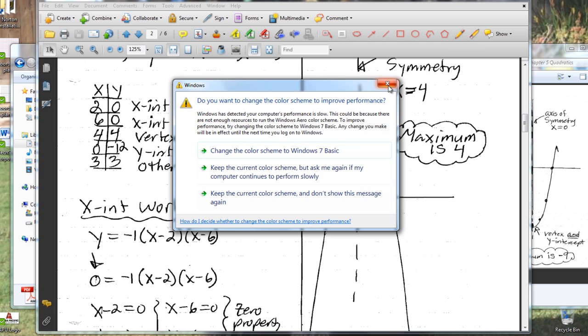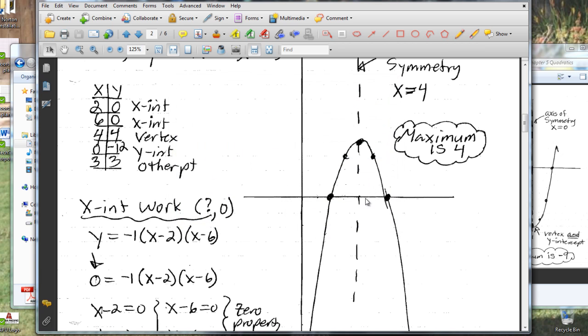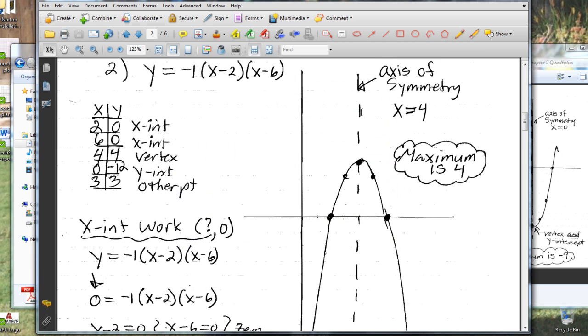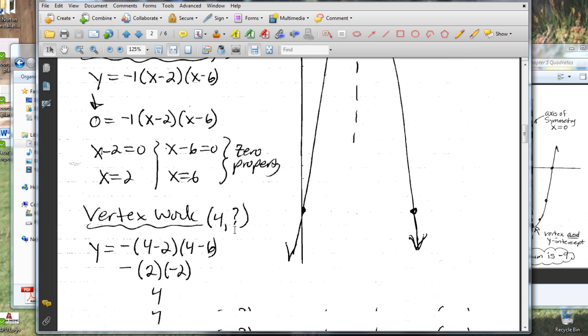So now that we know that, we know that the axis of symmetry is x equals four. We also know the vertex must always be on the axis of symmetry. So therefore, the vertex has to be four something, because it has to be on the axis of symmetry.